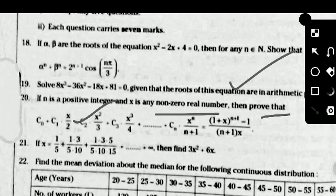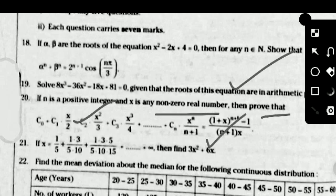Problem 20, from binomial theorem: if n is a positive integer and x is non-zero, show that C₀ + C₁(x/2) + C₂(x²/3) + C₃(x³/4) + ... + Cₙ(xⁿ/(n+1)) = [(1+x)ⁿ⁺¹ − 1] / [(n+1)x]. Problem 21, from binomial theorem: if x = 1/5 + (1/5)(3/10) + (1·3·5)/(5·10·15) + ... up to infinity, find the value of 3x² + 6x.